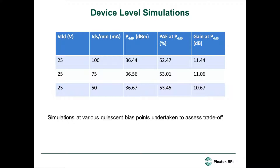I'll talk about the device level simulations first. What I'm showing here is a table of key performance parameters: power at 4 dB compression, power and efficiency at 4 dB compression, and gain at 4 dB compression. This table is for a unit cell consisting of 8 fingers with each finger of 150 micron width, so it's a 1.2 millimeter device.